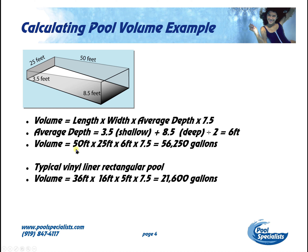So that means our volume is going to be 50 feet in length, 25 feet in width, six feet for our average depth, times our constant of 7.5 — and that gives us 56,250 gallons. A more typical vinyl liner pool is going to be 36 feet in length, 16 feet wide, five feet for your average depth, times 7.5, giving us 21,600 gallons — so we could round that to a 20,000 gallon pool.